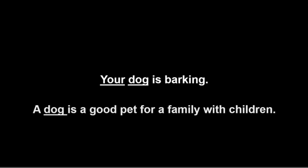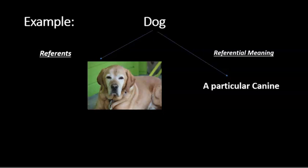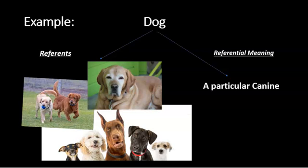In the sentence 'Your dog is barking,' the referent is a particular dog, and the referent of 'your' is a particular person whose dog is being referenced. If you are talking to your neighbor, 'your' refers to your neighbor and 'dog' refers to the dog owned by your neighbor. However, in the sentence 'A dog is a good pet for a family with children,' the referent for 'dog' is the concept of a typical dog — the mental image a typical English speaker has in mind when the word 'dog' is spoken.